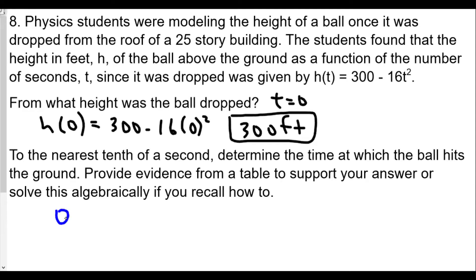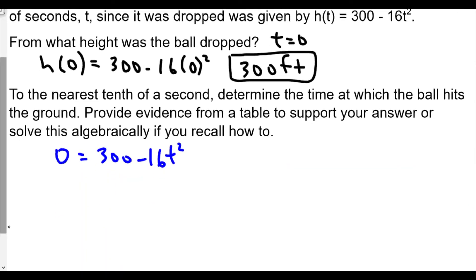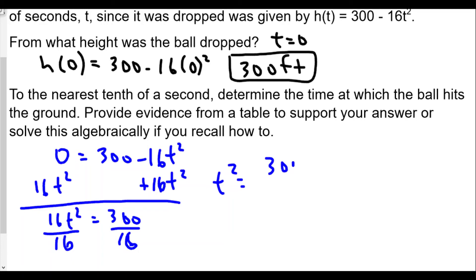To the nearest tenth of a second, determine the time at which the ball hits the ground. Provide evidence from a table to support your answer or solve algebraically if you recall how to. When the ball hits the ground, the height will be 0. So we want to set this equal to 0. So 0 = 300 - 16t². Now I'm solving for t. I'm going to add 16t² to both sides. So now I have 16t² = 300. I'm going to divide both sides by 16.